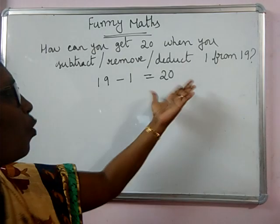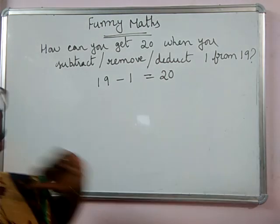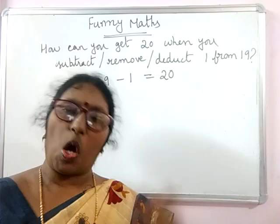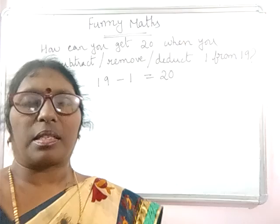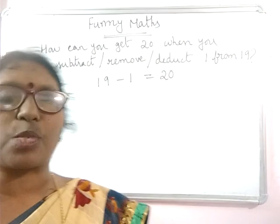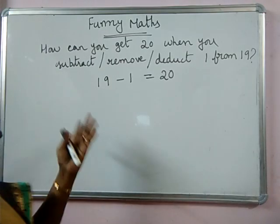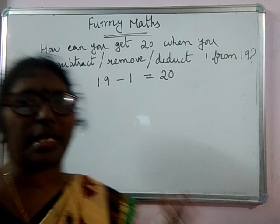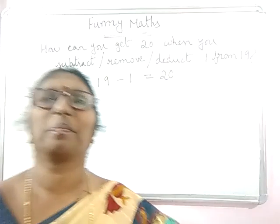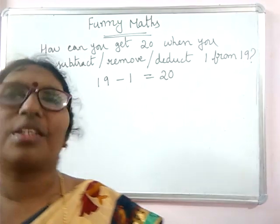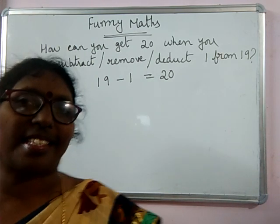Either you want to remove 1 — if you remove 1 from 19, or delete, or whatever it may be, 19 minus 1 is equal to 20. Or you remove, subtract, or delete 1. How to get 20? Take a few seconds. Just think — very easy.